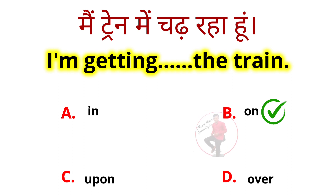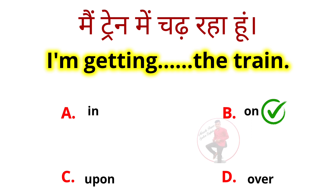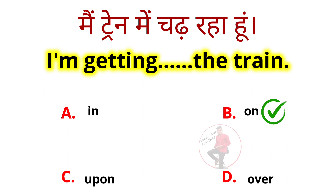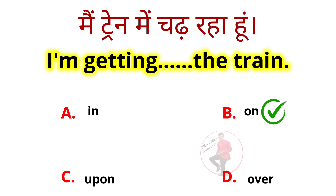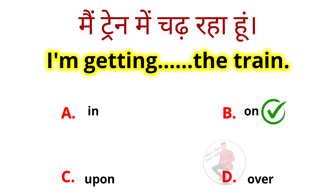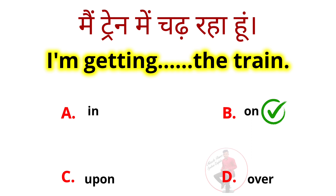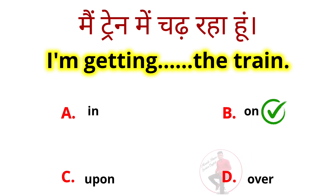When you board any vehicle where you can move around and your head doesn't touch the roof, you use 'on.' For a car, 'in' is used because you cannot walk around inside it. Where you can move freely, use 'on.' So: I am getting on the train — mein train mein chadh raha hun.